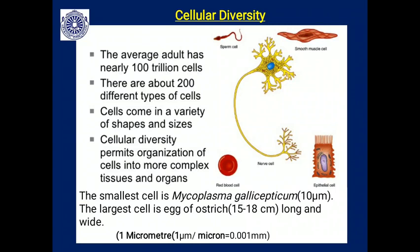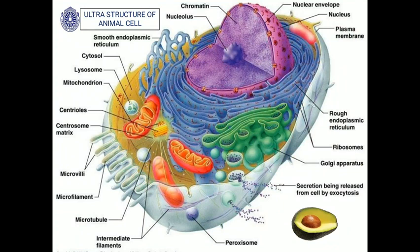Cellular diversity permits the organization of cells into more complex tissues and organs. The smallest cell is the mycoplasma cell, about 10 millimicrons (micrometers) in size. The largest cell is the egg of the ostrich — the whole egg is a cell, about 15 to 18 centimeters long and wide. For reference, one micrometer equals 0.001 millimeters. Ultrastructure means the cell viewed at higher magnification under an electron microscope.